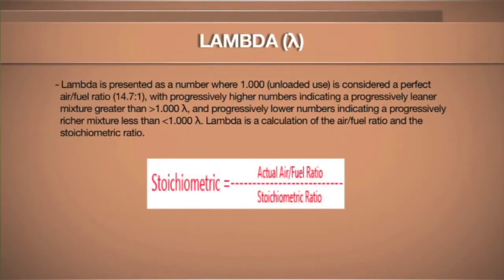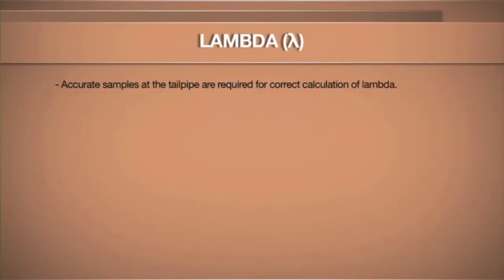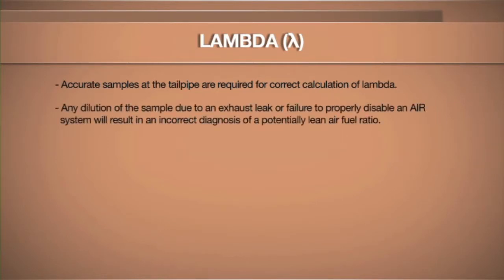Variations in fuel — whether we're using regular, super unleaded, or E85 — have a great influence on how that catalytic converter is going to perform and on engine control systems. Lambda is presented where a number of 1.000 is the preferred stoichiometric fuel control, or 14.7 to 1 as we used to know it. A leaner mixture is going to be greater than 1.000 lambda. Anything below 1.000 is considered a rich condition — a little reversed from what we're used to with oxygen sensor calculations. An accurate reading at the tailpipe is very important; make sure it's not diluted from an exhaust leak. A diluted exhaust leak can throw our lambda calculations off considerably and give us false indications of a problem.